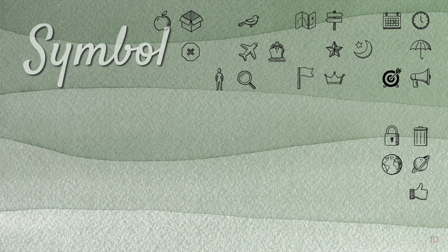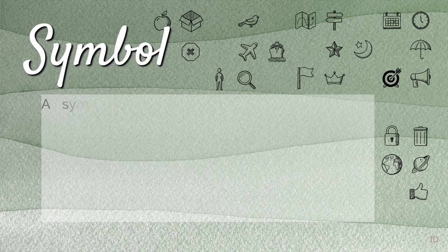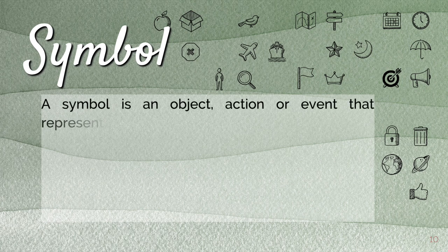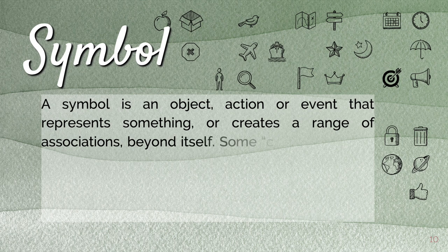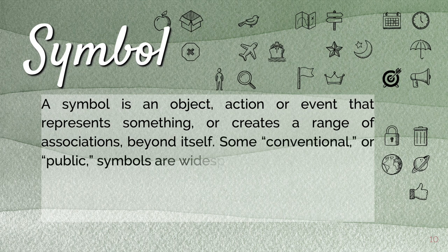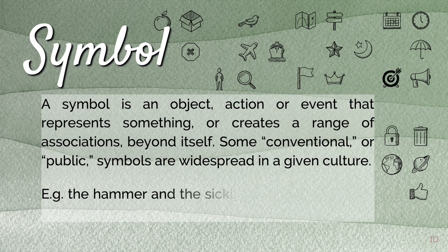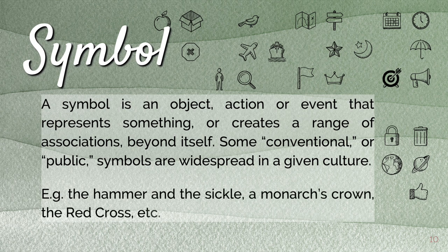So let's take a look at symbol now. A symbol is an object, action, or event that represents something or creates a range of associations beyond itself. Some conventional or public symbols are widespread in a given culture — for example, the hammer and the sickle, a monarch's crown, the Red Cross, etc.